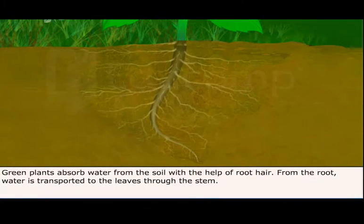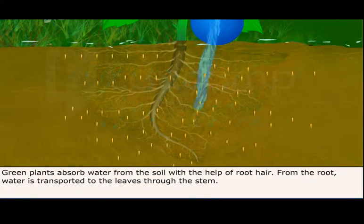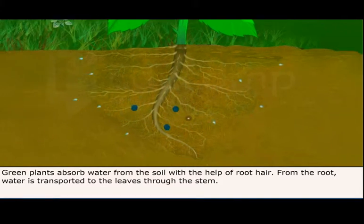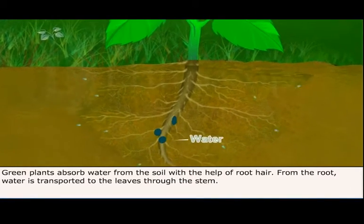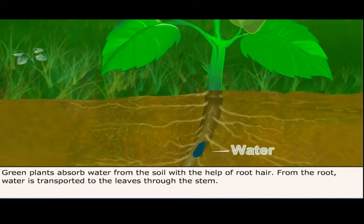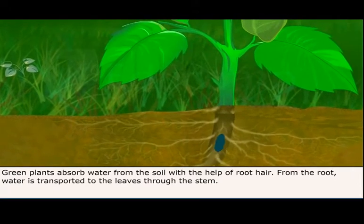Green plants absorb water from the soil with the help of root hair. From the root, water is transported to the leaves through the stem.